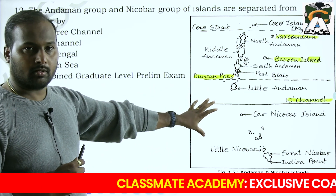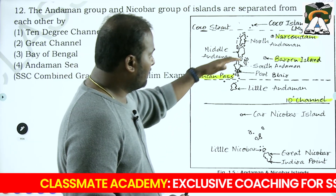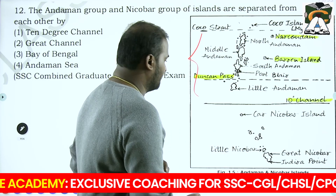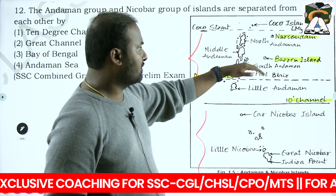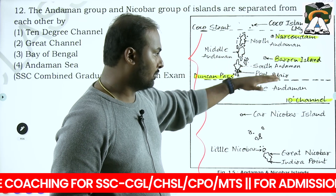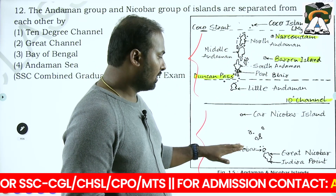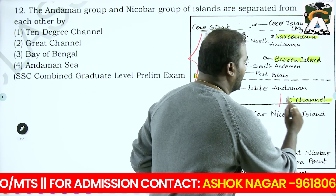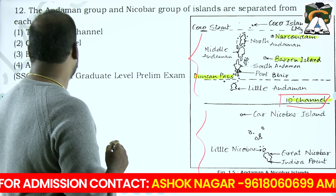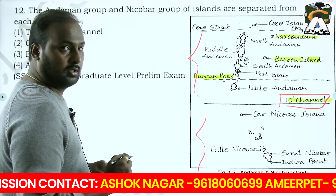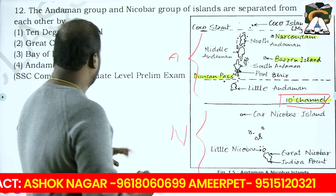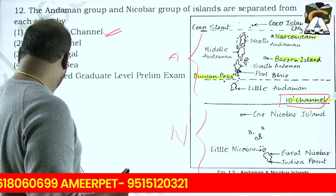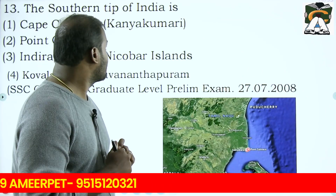'The Andaman and Nicobar group of islands are separated from each other by...' Looking at the image, the Andaman is divided into North Andaman, Middle Andaman, South Andaman and Little Andaman. The Nicobar is divided into Car Nicobar, Little Nicobar and Great Nicobar. The 10-degree Channel is the answer, separating the Andaman Islands from the Nicobar Islands.